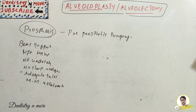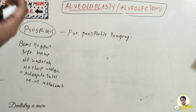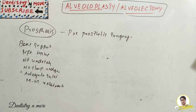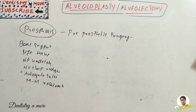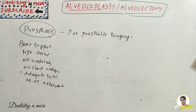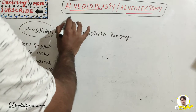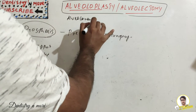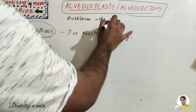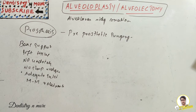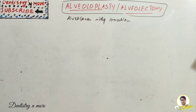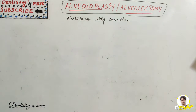We are now jumping directly to alveoloplasty. Basically, pre-prosthetic surgeries include alveolar ridge correction, ridge extension, and ridge augmentation — that will be a lengthier session. Today I will be dealing only with alveoloplasty, which comes under alveolar ridge correction. We also have procedures like extension and augmentation. Moving on to alveoloplasty, before that we need to learn what alveolectomy is.